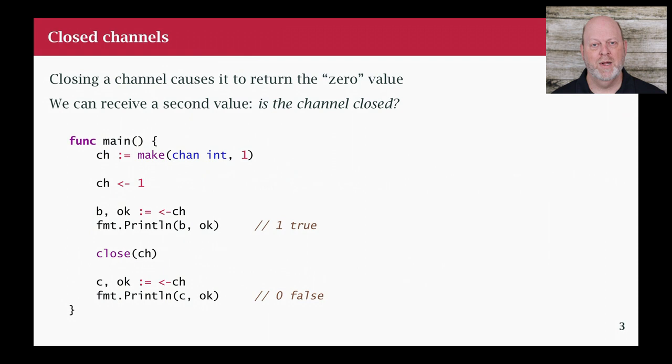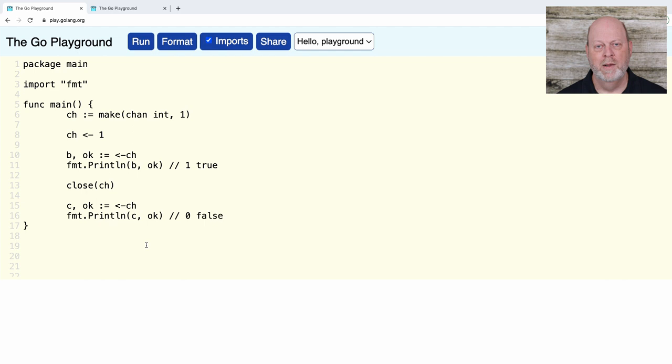I can read a channel and if it's closed, I get the default value. And if I use the two operation read, then the second value tells me is the channel actually open or is it closed and I'm getting default values from reading a closed channel. You may ask, why is it useful to read a closed channel? And let's put that off for just a sec.